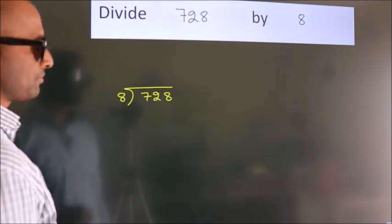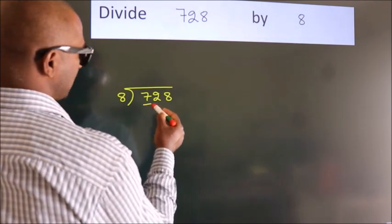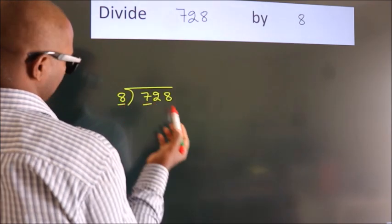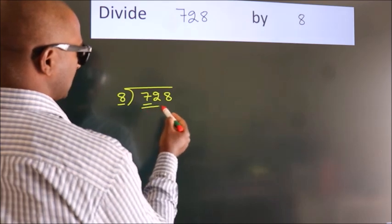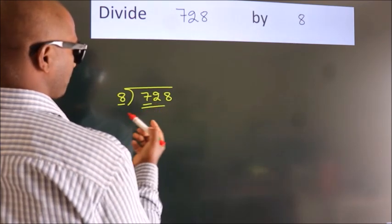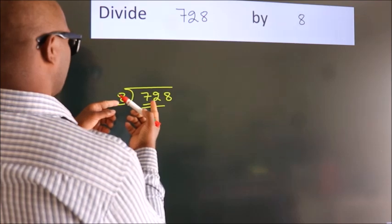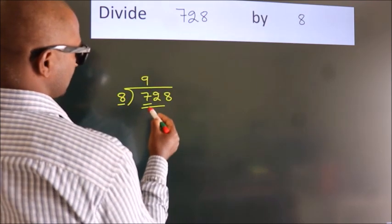Next, here we have 7, here 8. 7 is smaller than 8, so we should take 2 numbers, 72. When do we get 72? In the 8 table. 8 nines, 72.